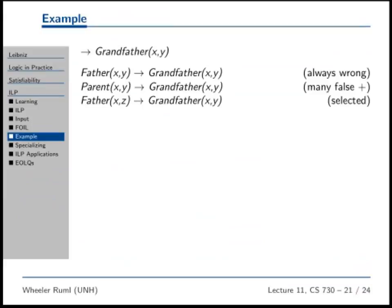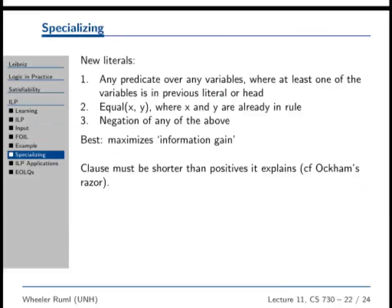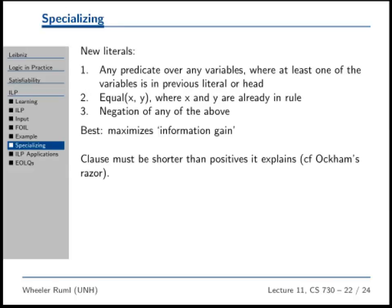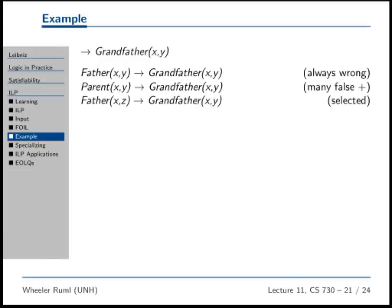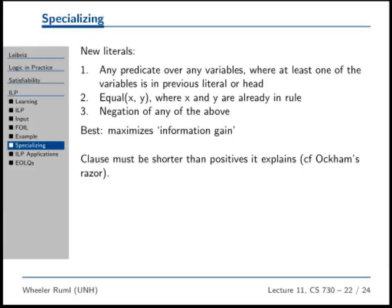The new literals you look at are any predicate over any variables where at least one of the variables in the previous literal are the head. Equal is something that you think of adding or negation of something. And you choose the one that maximizes information gain. I'm not going to talk about information gain right now but I promise you that when we get to supervised learning of decision trees we'll talk about this.